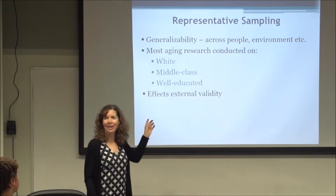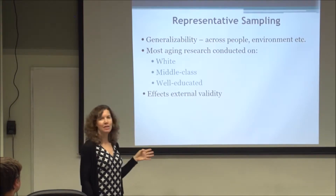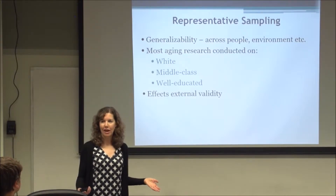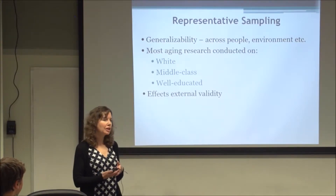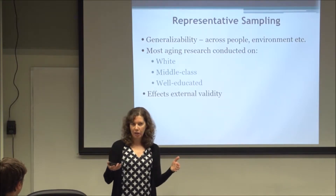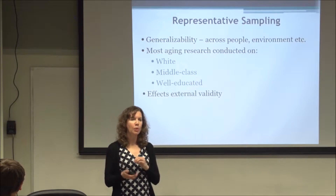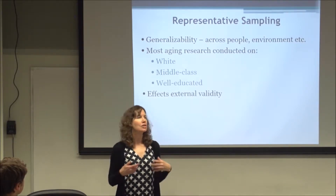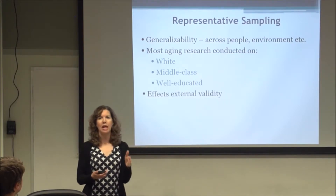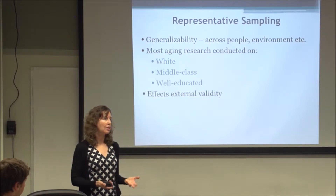We just talked about the importance of reliability and validity — that's something we have to pay attention to. We're not going to be able to test all of that, but we can use the literature to determine, for example, what is a good type of Likert scale to use, like 1 to 5 or 1 to 7, or maybe we want to use a percentage scale of 0 to 100%. You have to use what's out there in the literature to design the best method you can for your research.